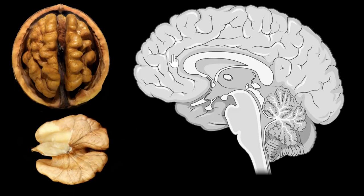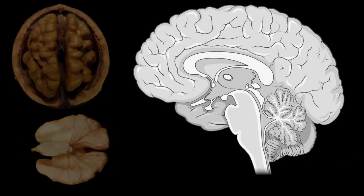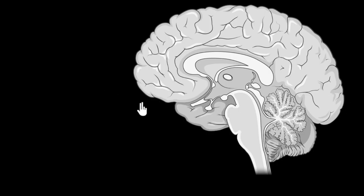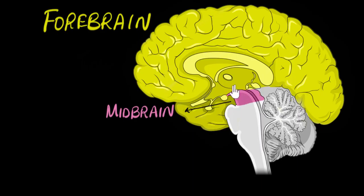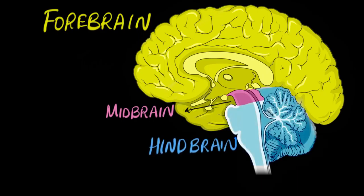That's basically what we're looking at — the inner side of one of the hemispheres. We can broadly divide our brain into three parts: the forebrain, which is this big yellow section; the midbrain, which is this tiny pink section; and the hindbrain, or the lower brain, which is this blue section. Usually when we say humans have a big brain, we're basically talking about this forebrain section.